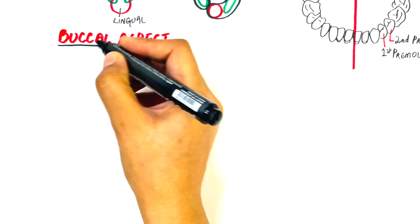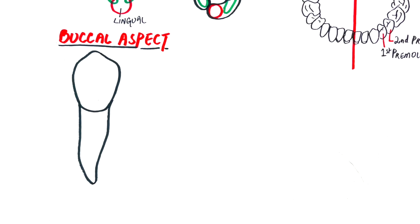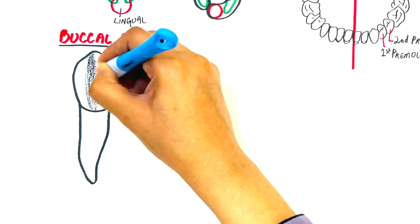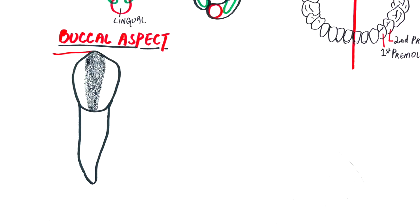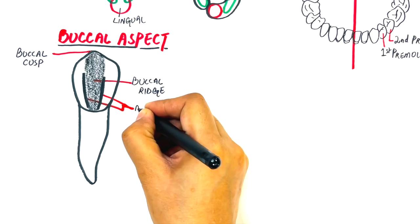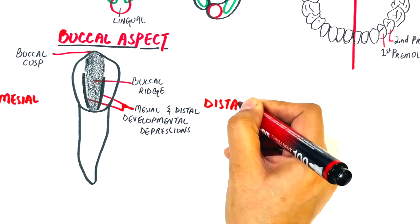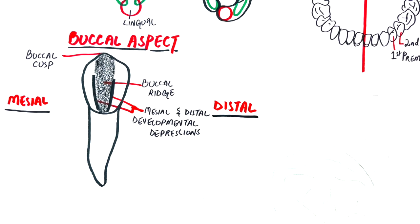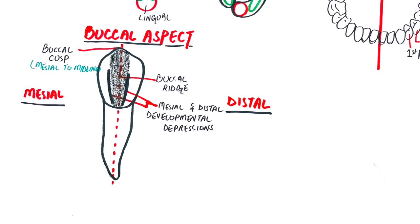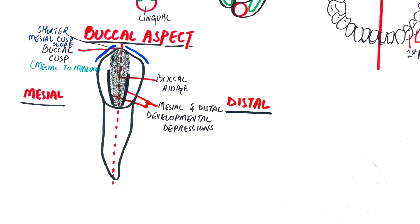From the buccal aspect, the crown is roughly trapezoidal in shape. The middle part of the tooth is more prominent, resulting in a large pointed buccal cusp and creating a prominence at the middle lobe called the buccal ridge. The mesial and distal developmental depressions separate the three buccal lobes of the tooth. The tip of the buccal cusp is located a little mesial to the midline of the crown, and the mesial cuspal slope is shorter than the distal cuspal slope.